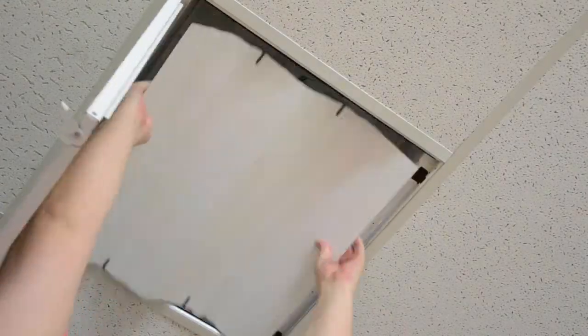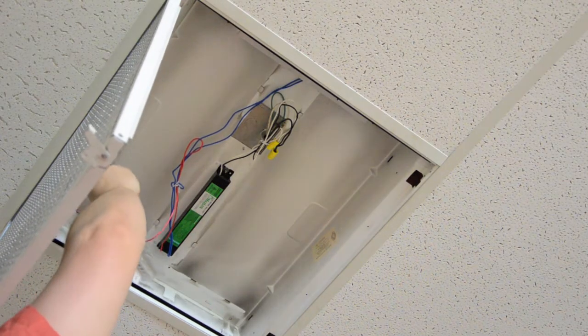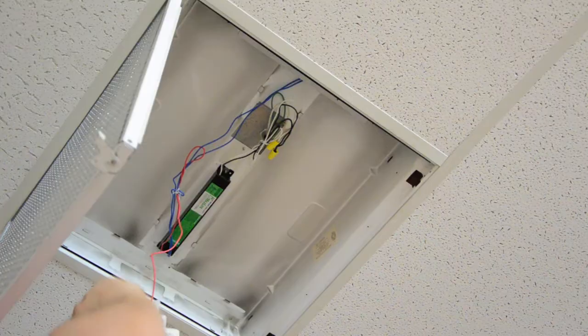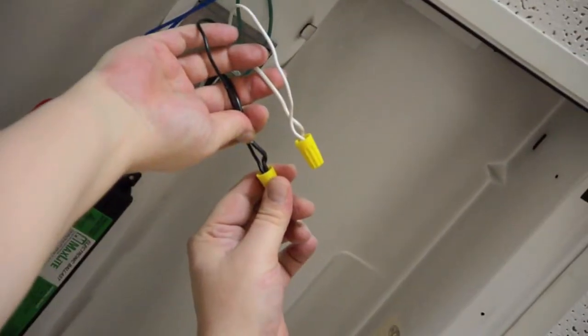Shut off all power to the fixture. Remove the tombstone fluorescent sockets and the socket holder bracket they are mounted to. Remove the ballast cover, disconnect the main power from the ballast, and remove the ballast from the fixture.